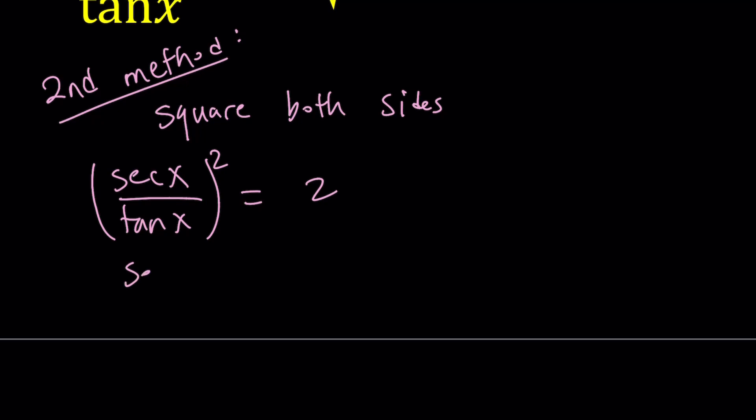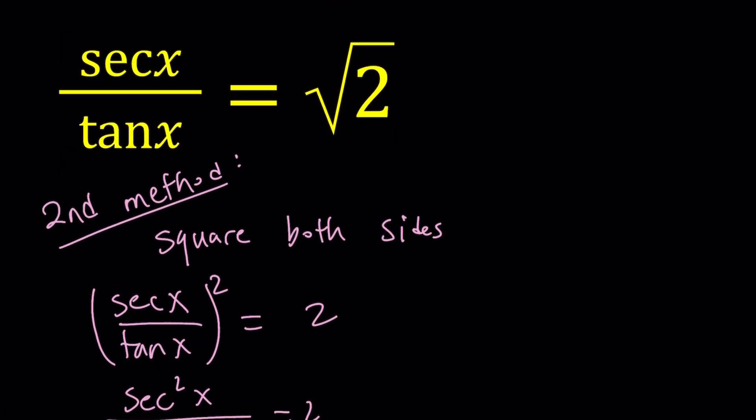Now we do have a nice identity that we can use here. So secant squared divided by tangent squared equals 2. We just have to make sure that in the original expression tangent x cannot be 0. So we have that requirement.